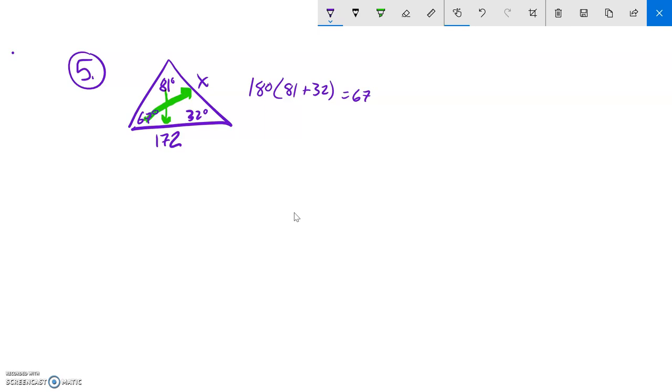So now I can set up my law of sines, and I'm going to have x over the sine of the angle opposite it. And that should be the same as 172 over sine of the angle opposite it.